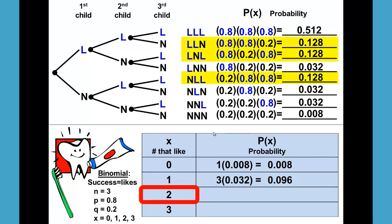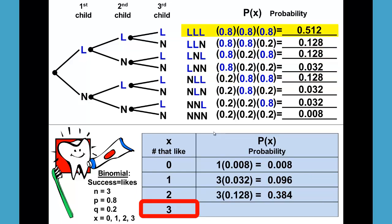Then we're looking for two L's and there are three with two L's, so that would be 3 times 0.128 because all of their probabilities are the same and we get 0.384.